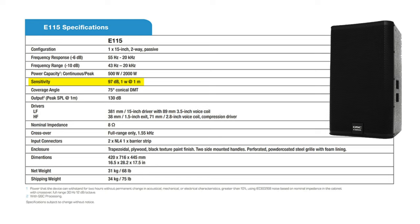You can find the sensitivity of your speakers in the technical specifications online or in the user manual. For example, this QSC E115 speaker will produce 97 dB SPL at one meter away with one watt of power.